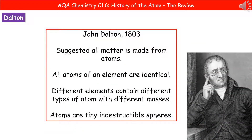From there, we jump forward to 1803, where we meet the first scientist we do need to know the name of, which is John Dalton. What Dalton actually did was he suggested that all matter is made from atoms and that all atoms of an element are identical to one another.